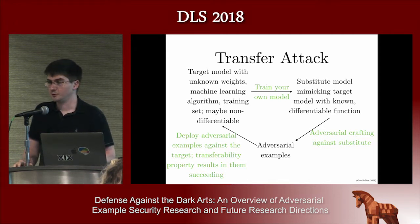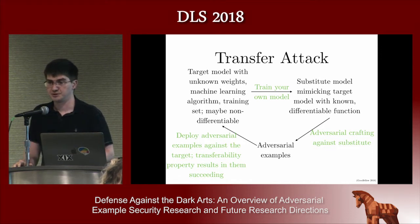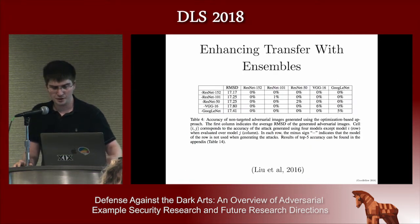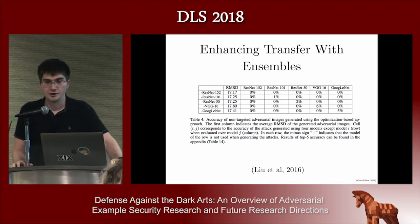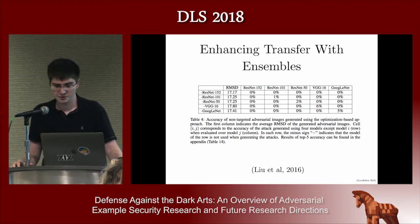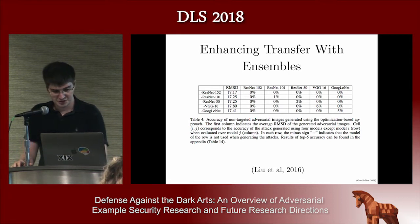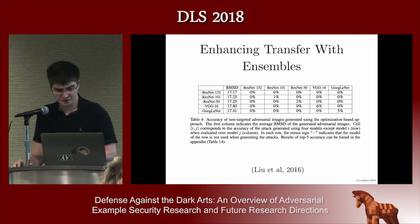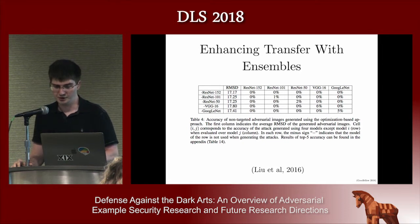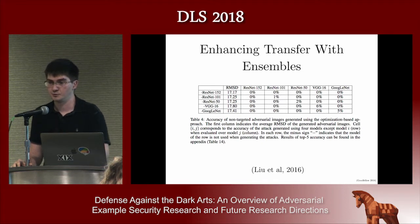There are ways to improve the likelihood of this transfer attack succeeding. You can train your substitute model to explicitly reverse engineer the target by sending inputs to it, observing the outputs, and adding them to the training data. Another approach is to attack an ensemble of models — if you find an adversarial example that fools all of them, it's extremely likely you'll also fool an additional unknown target. Researchers found that successfully fooling five different convolutional nets gave essentially 100% success at fooling a sixth.